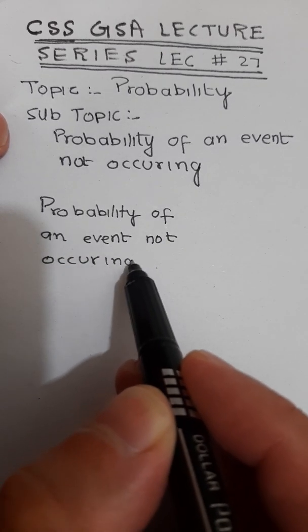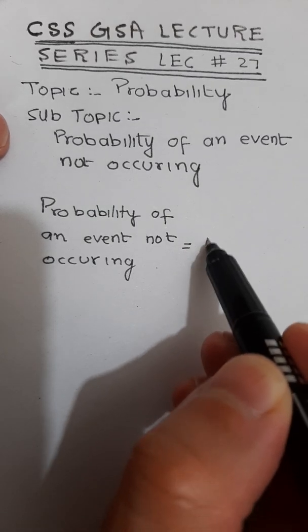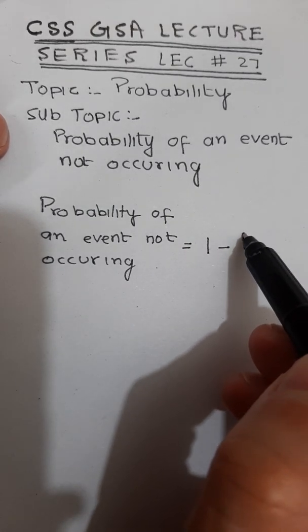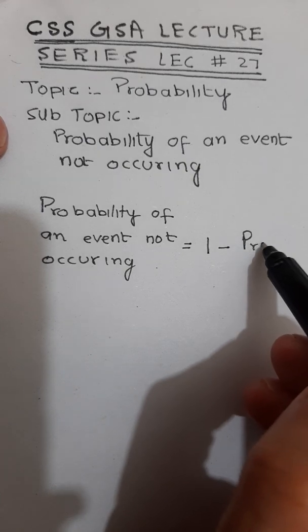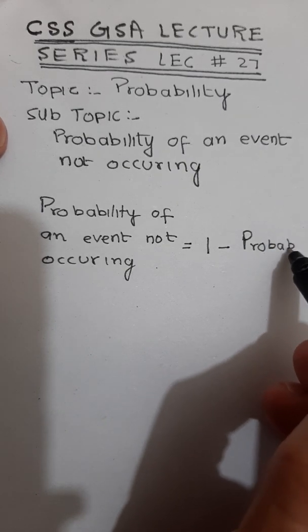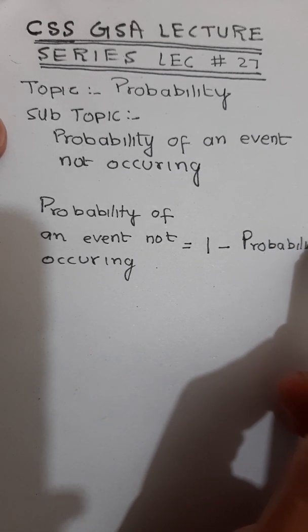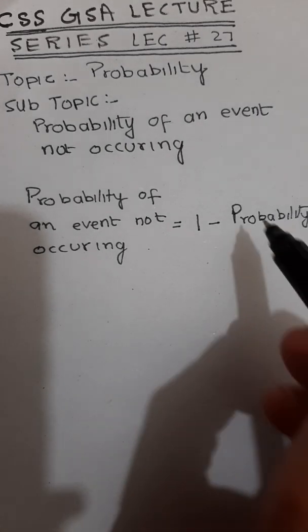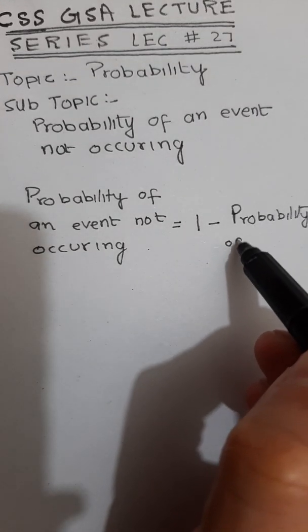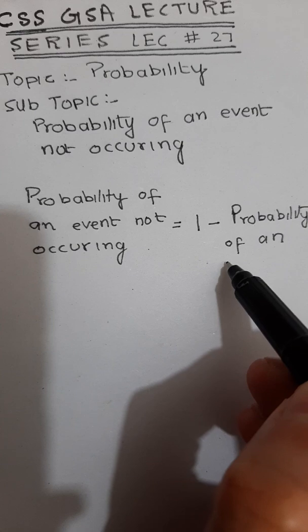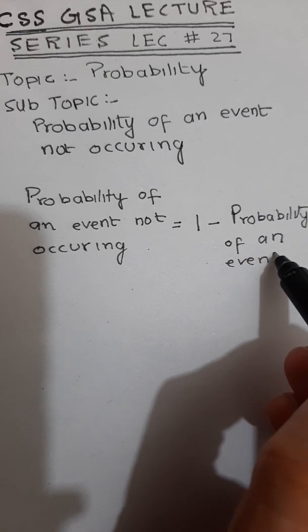...is basically equal to one minus probability of an event which is occurring.